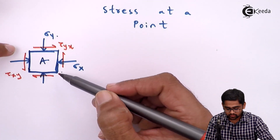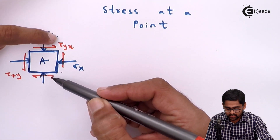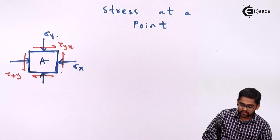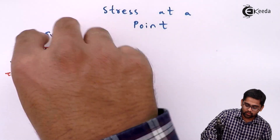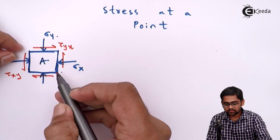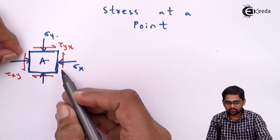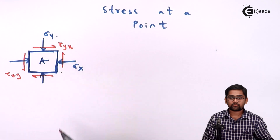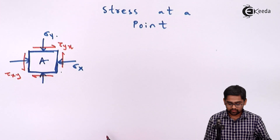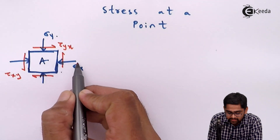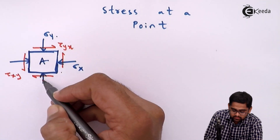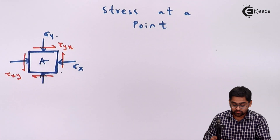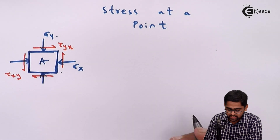The clockwise shear has to be balanced by an anti-clockwise shear. Since this is a square block, the dimensions are equal, so tau yx and tau xy must be equal in magnitude. The clockwise shear force tries to rotate the block clockwise, and the anti-clockwise shear keeps it in equilibrium. These are balanced by the moment equilibrium equation, while sigma x forces are balanced among themselves.